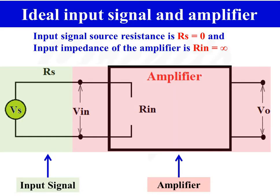So this is the ideal input signal and ideal amplifier. For an ideal input signal, source resistance RS is equal to zero. And for an ideal amplifier, input impedance RIN is equal to infinity. So whatever be the applied voltage VS, that voltage VS appears across the input terminals of the amplifier.